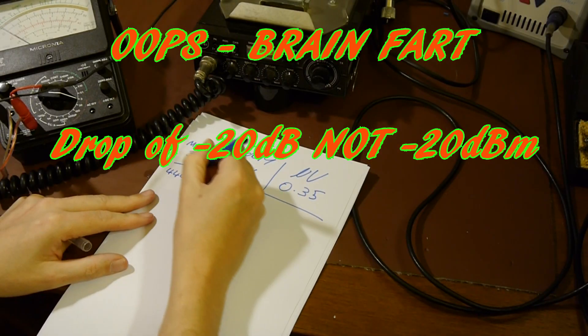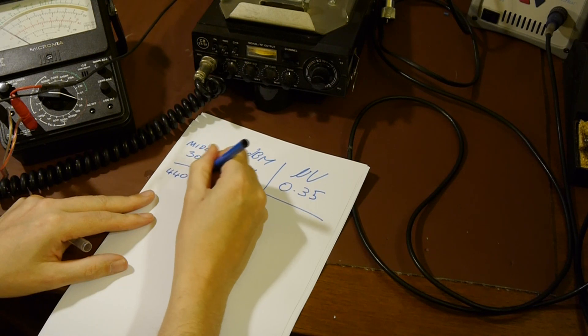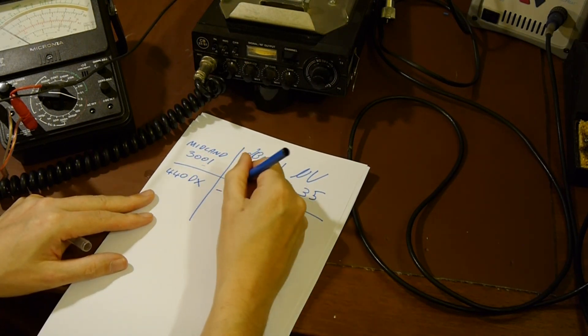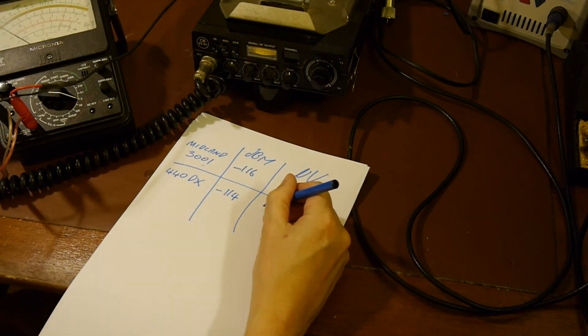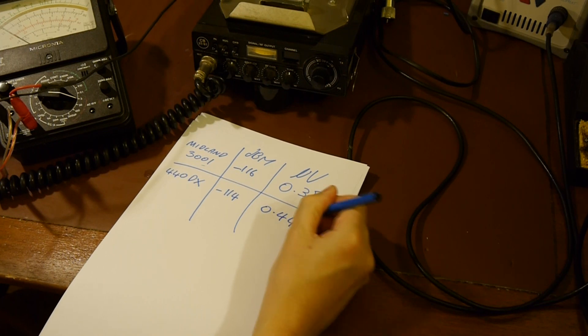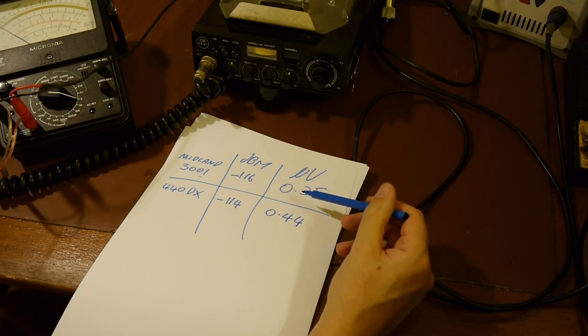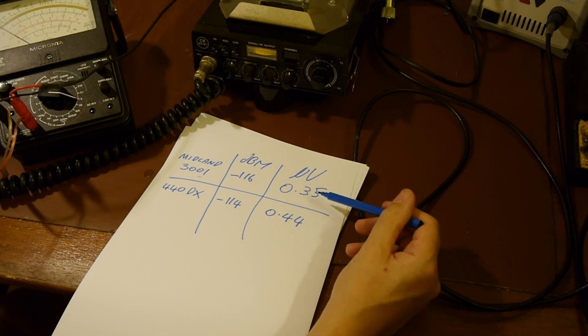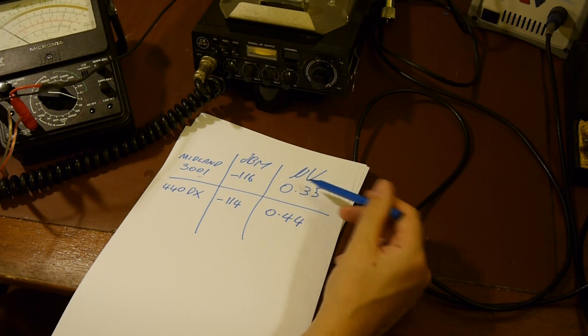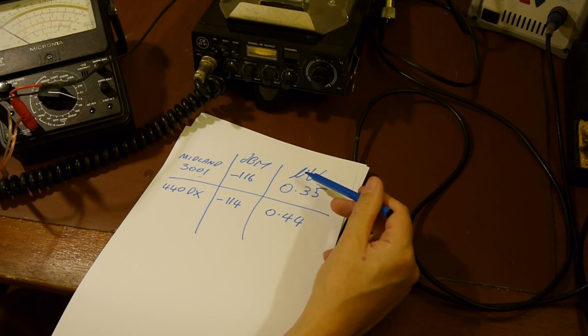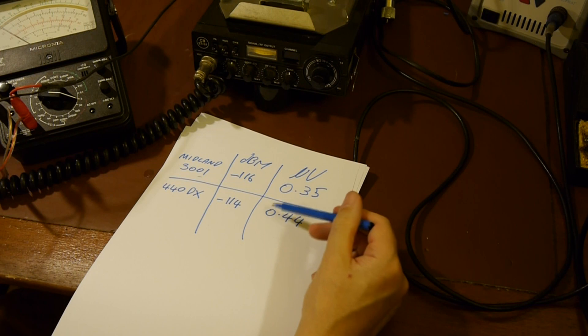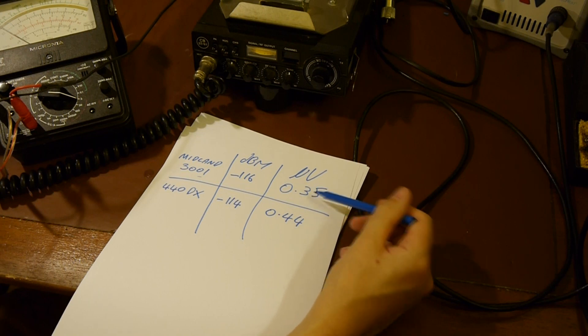So I'm going to write this radio down as being the 440DX. 440DX, level was minus 114 dBm. Another way of saying that is 0.44 microvolts. So we've now got two transceivers on our little scoreboard there. We've got the Midland 3001 and we've got the Communicator 440DX. And just looking at the two, it's actually the Midland 3001 that's winning the race so far. Because this has got better sensitivity. This has got a sensitivity down to 0.035 microvolts. Whereas the 440DX could only achieve the same 20 dBs of quietening at an input signal level of 0.44 microvolts. So the Midland is winning.